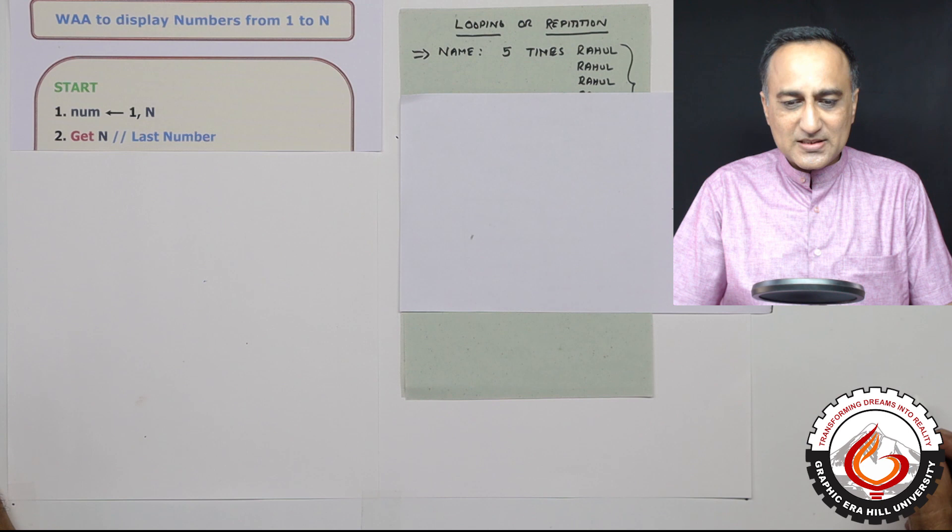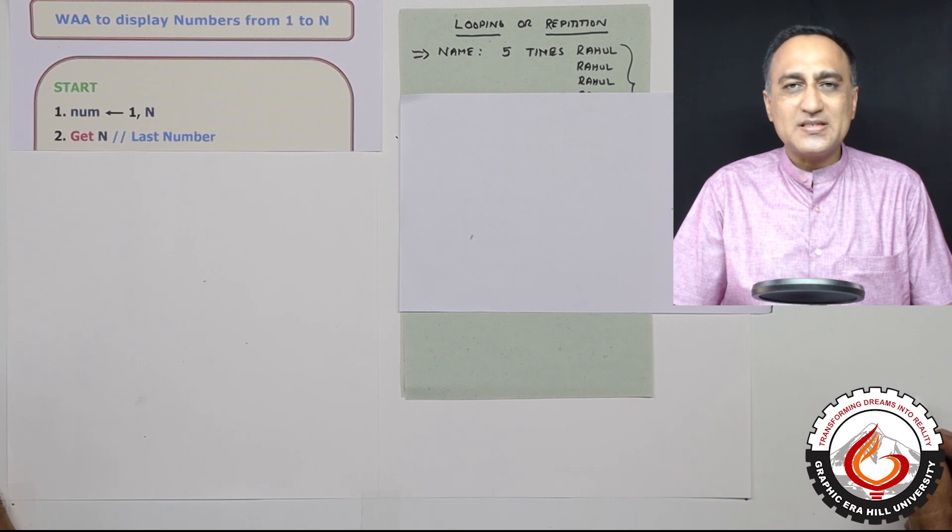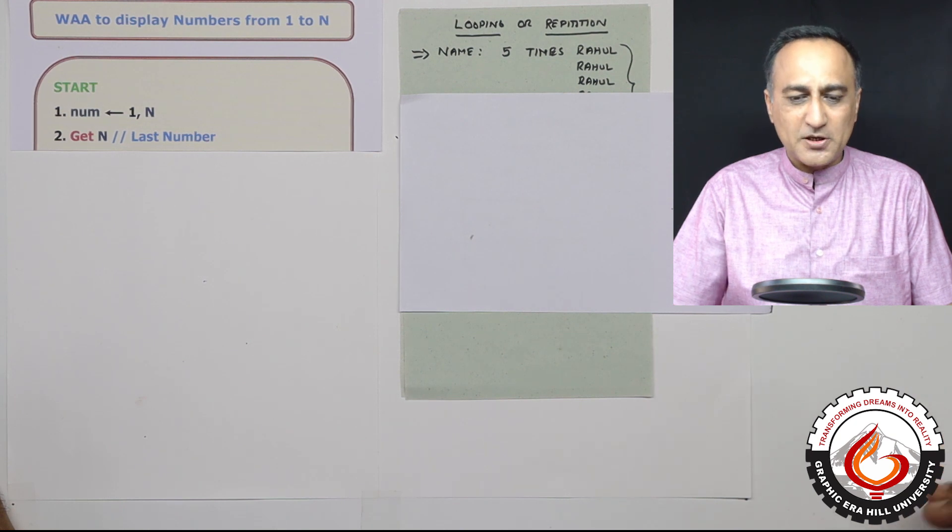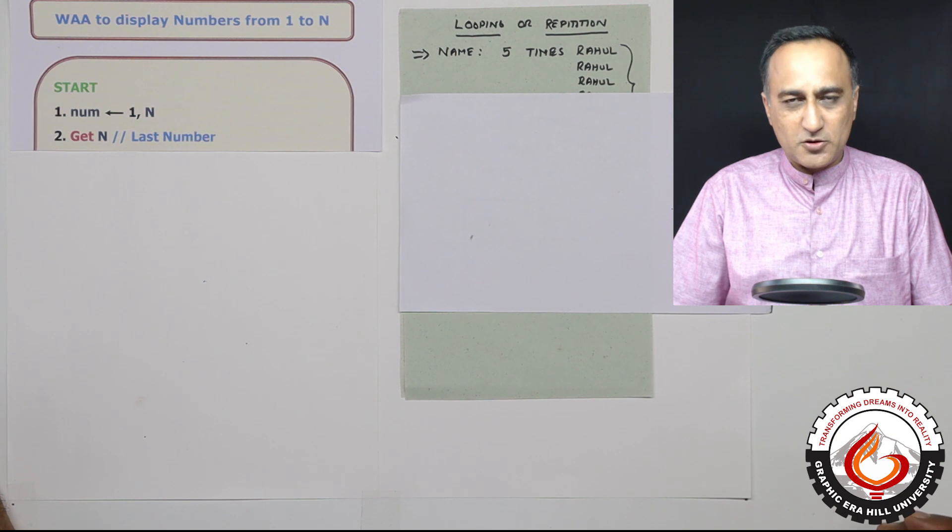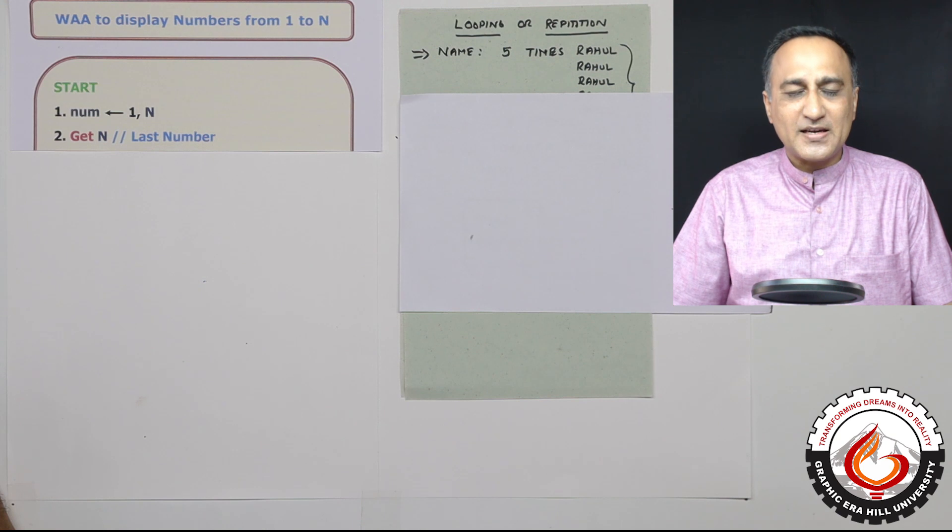But the biggest strength or advantage of a computer is the ability to do the same task again and again without making mistakes and without ever getting tired because it is a machine. So let's try to understand how we can write algorithmic logic to do looping or repetitive tasks using algorithms.